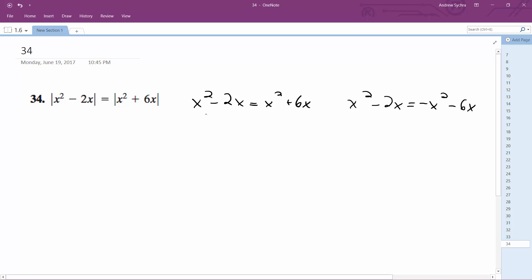Alright, so what happens here is x squared cancel out. You get negative 2x equals 6x. Subtract 6x, or however you want to do it, and then we get negative 4x equals 0. Divide through by negative 4, and anything divided by 0 is 0, so we get x equals 0.